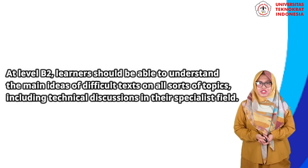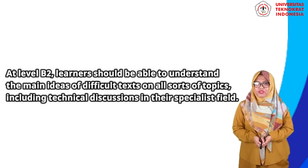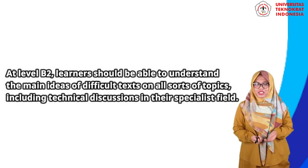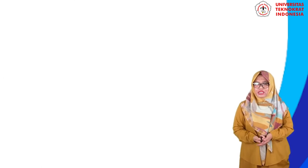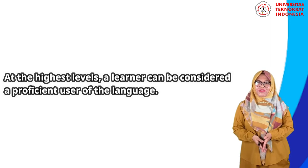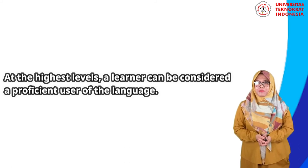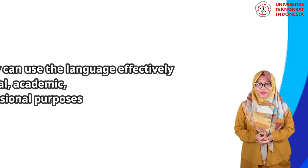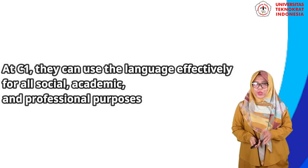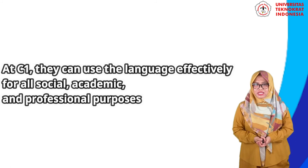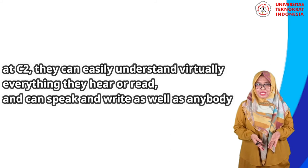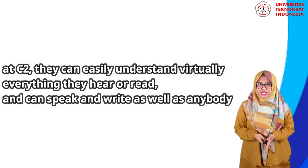Moving to level B2, learners should be able to understand the main ideas of difficult texts on all sorts of topics, including technical discussions in their specialist field. They can talk fluently with native speakers without any pressure on either side. At the highest levels, a learner can be considered a proficient user of the language. At C1, they can use the language effectively for all social, academic, and professional purposes. At C2 level, they can easily understand virtually everything they hear or read, and can speak and write as well as anybody.